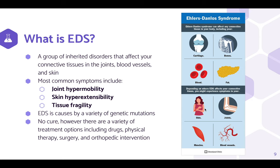The most common symptoms include joint hypermobility, skin hyperextensibility, and tissue fragility. EDS is caused by a variety of genetic mutations, and there is no cure. However, there are a variety of treatment options, including drugs, physical therapy, surgery, and orthopedic intervention. This graphic shows that Ehlers-Danlos Syndrome can affect any connective tissue in your body, including your cartilage, bones, blood, and fat.